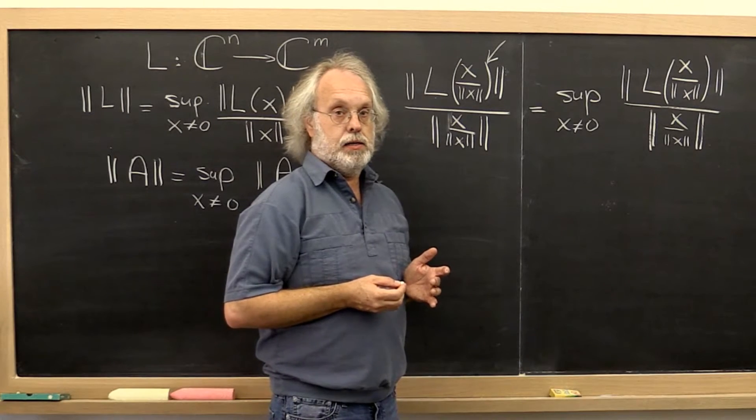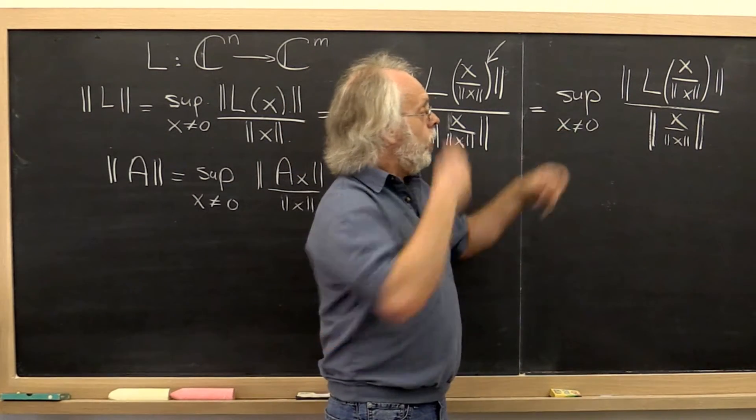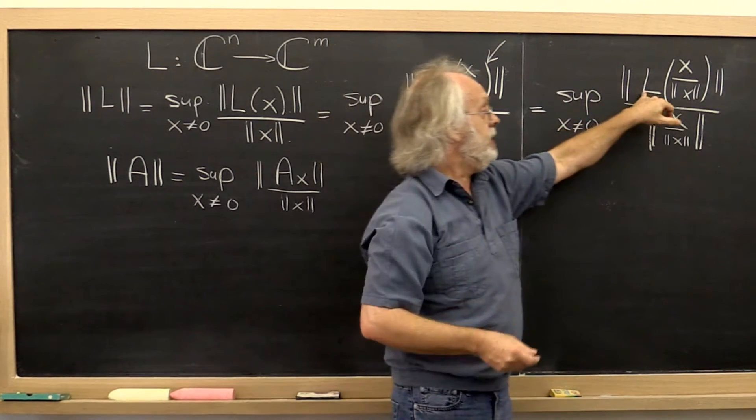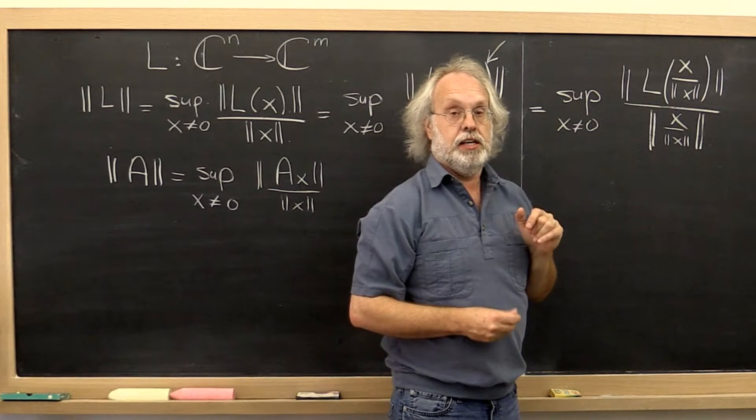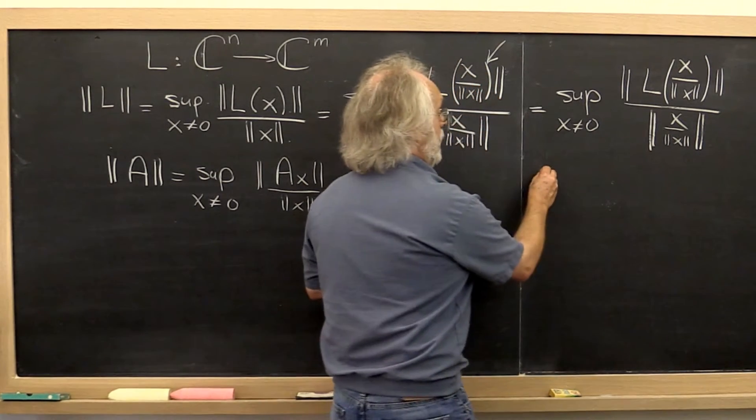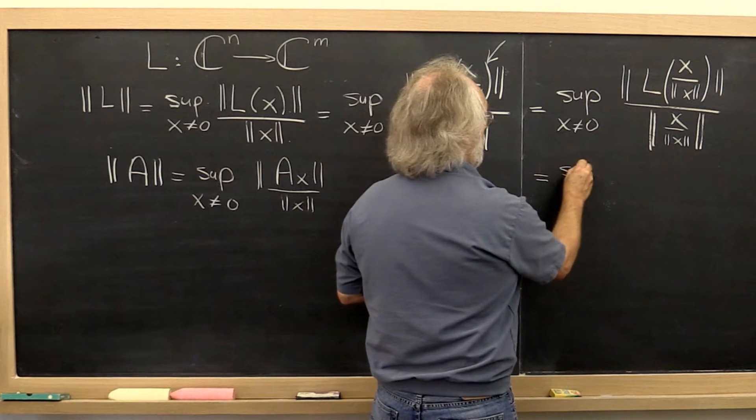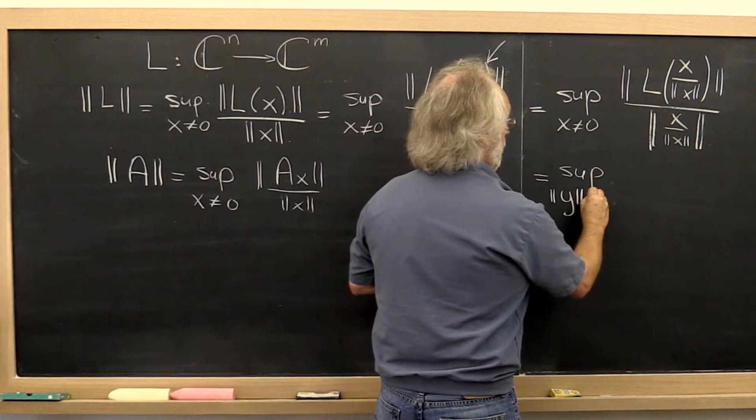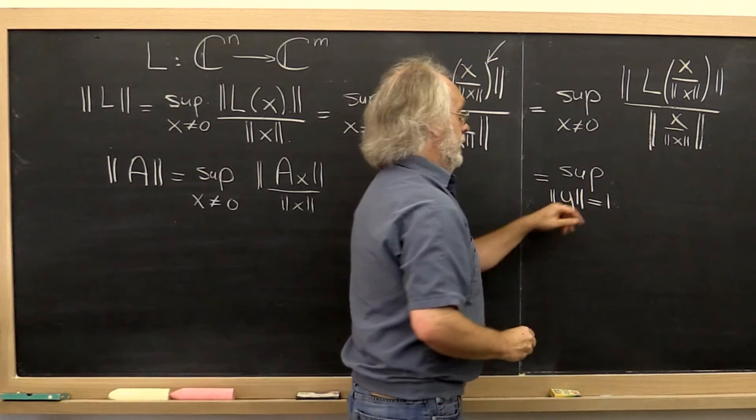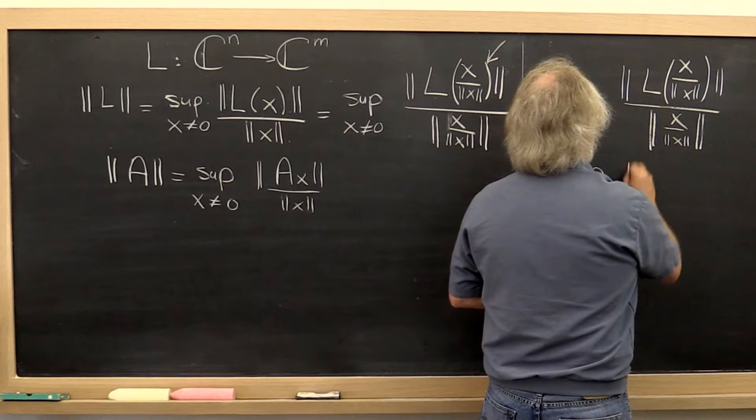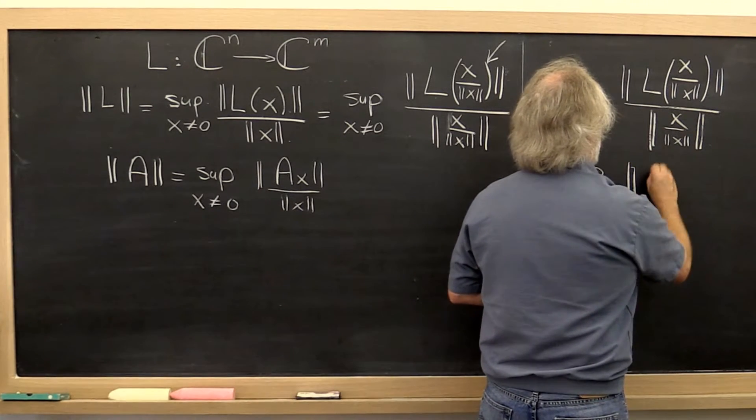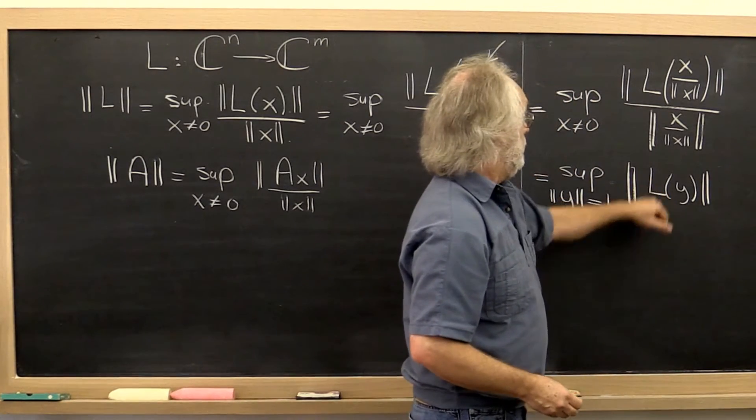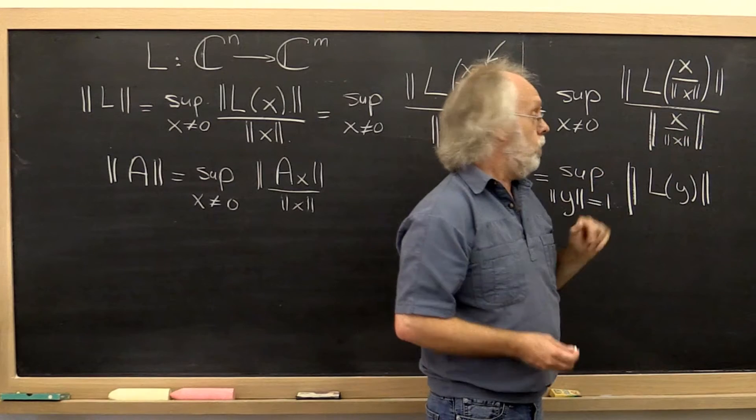But if you think about it, if you look at all possible vectors and you scale them to be of length 1 and then you look at it stretching, it's how it's being stretched, then you can also say, well, that's the same as the supremum over all y that have length 1 in the given norm of L of y divided by the length of y. But notice that this is just 1.